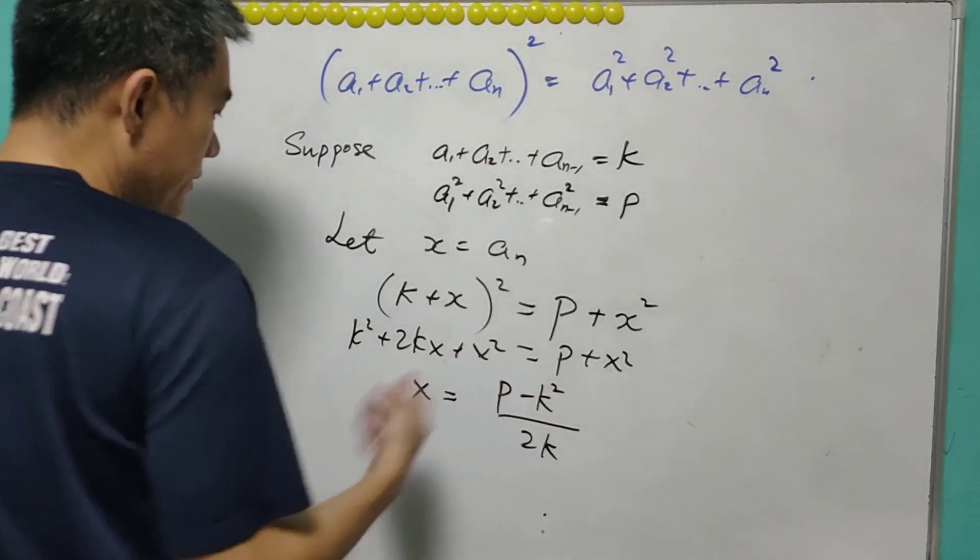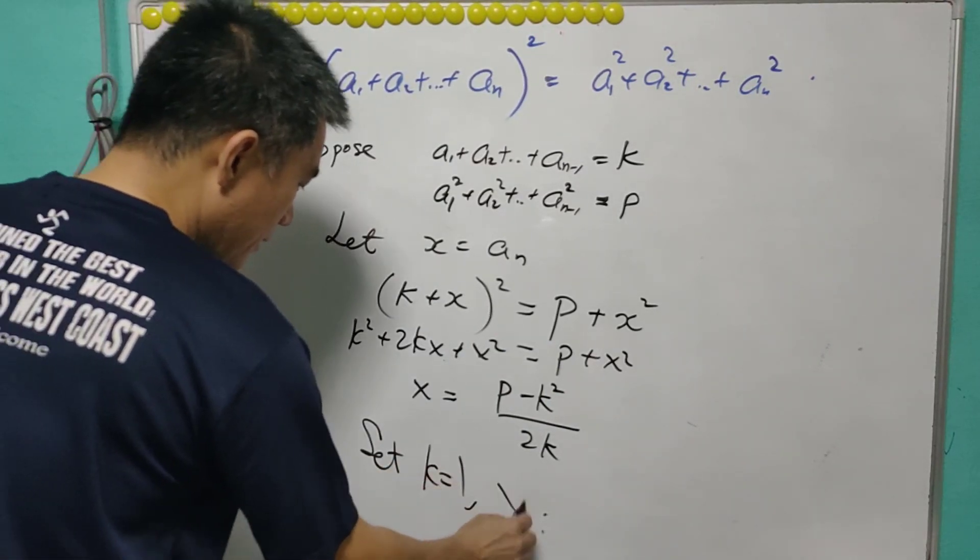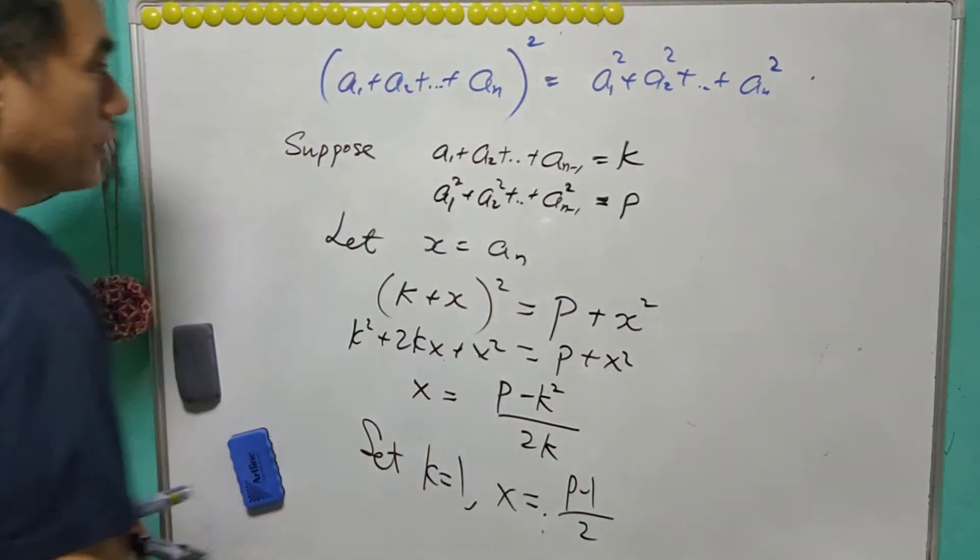In particular, if we set k equals 1, then x will equal to p minus 1 over 2. And it is easy based on this calculation.